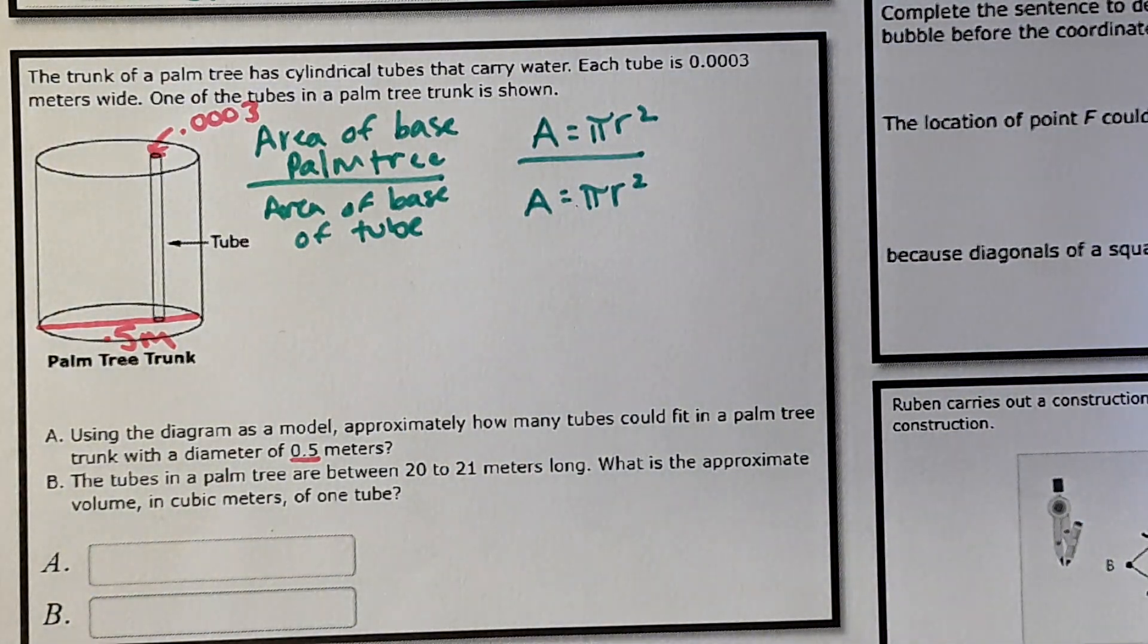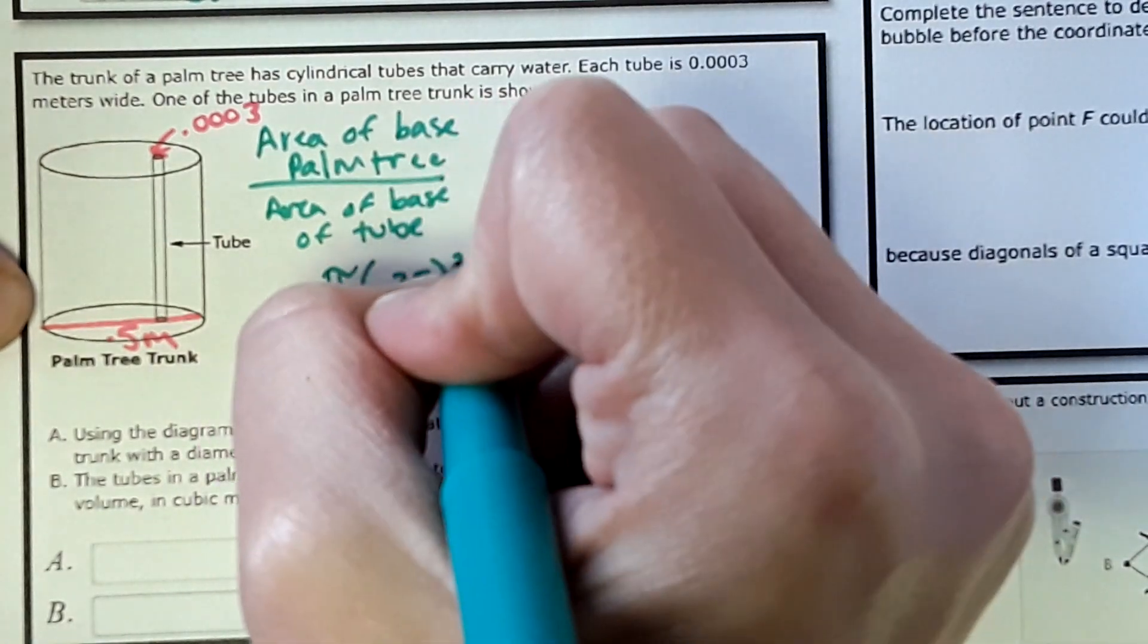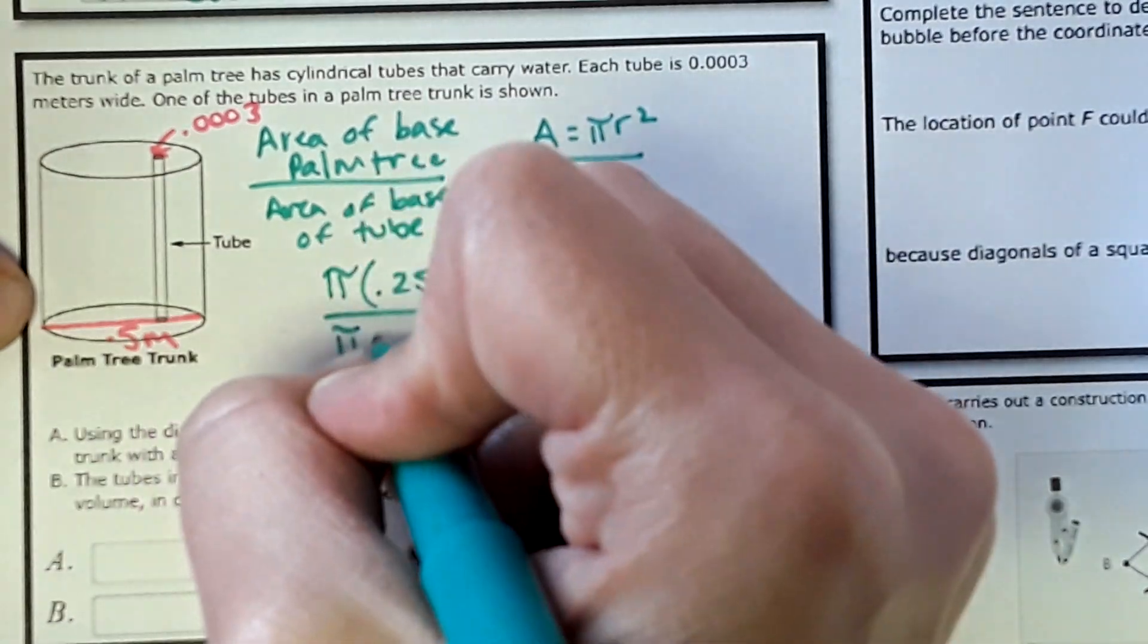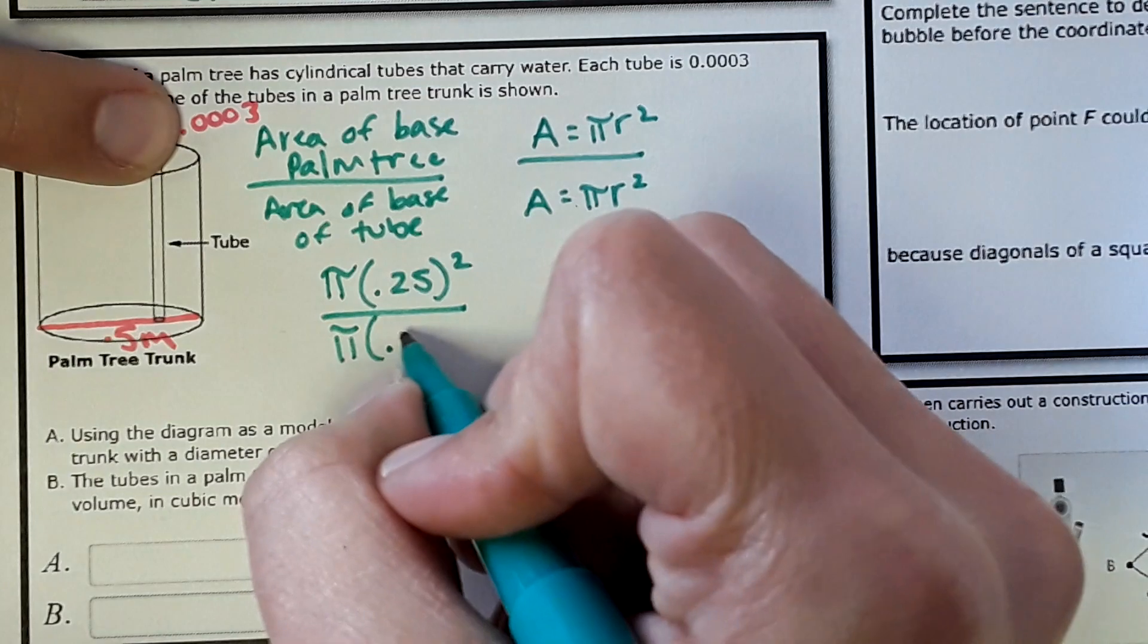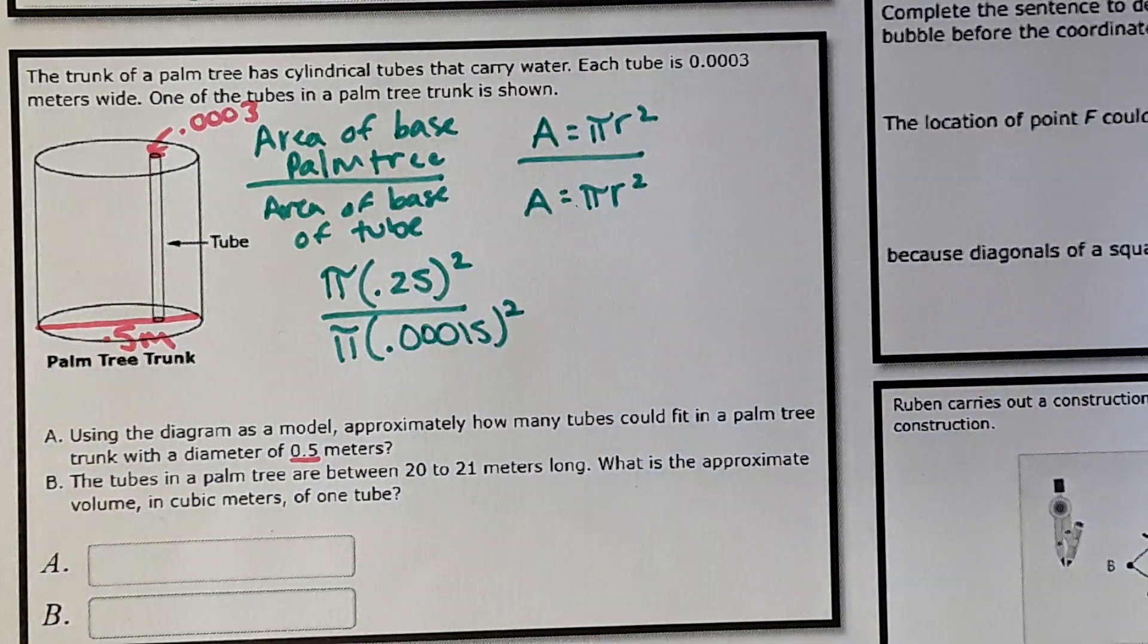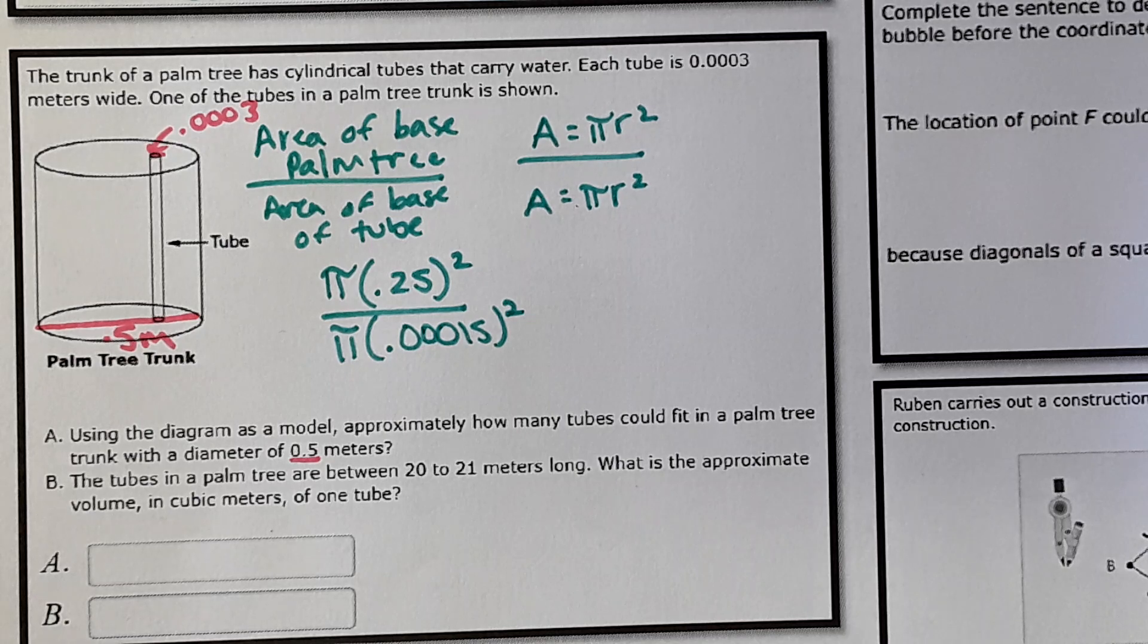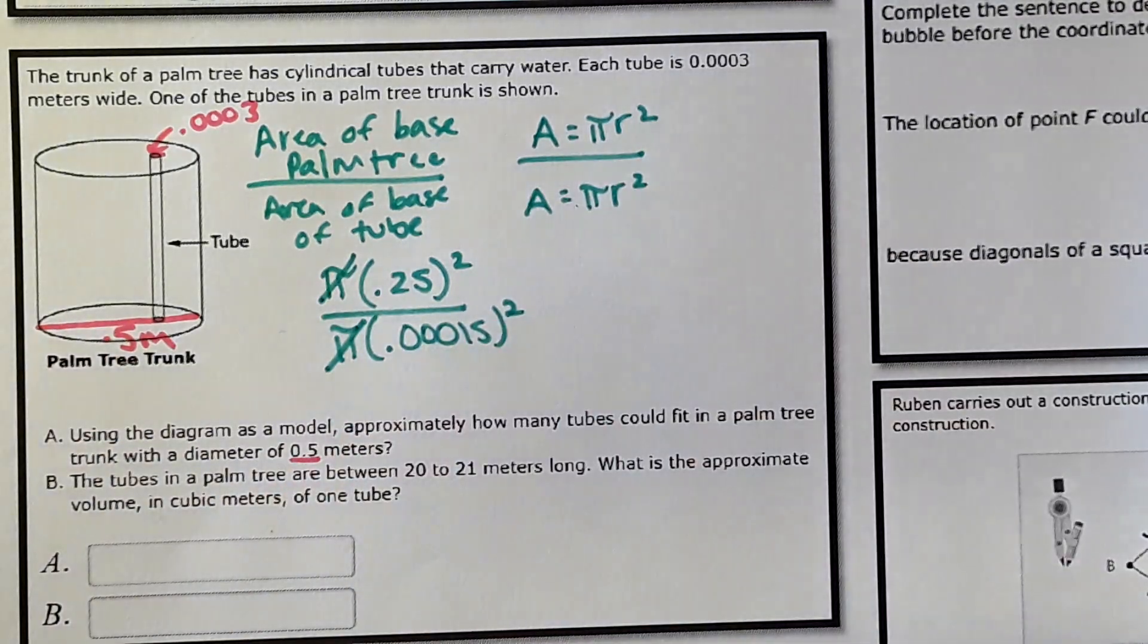So the radius would be half of that. So when we're setting that up, the palm tree, 0.25 meters squared over pi. Half of 0.0003 would be 0.00015 squared. And then you would divide this all out. So pi divided by pi is just going to cancel. That's just 1.